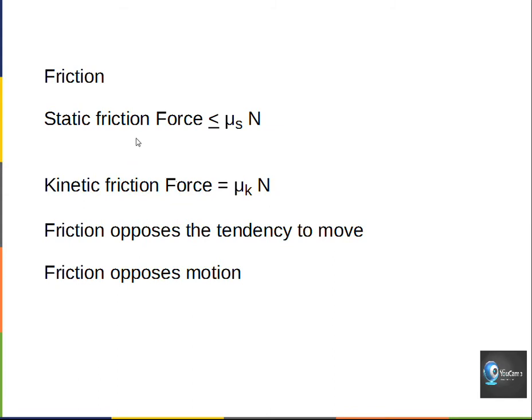So static friction is variable. It goes up to a value that is larger than the kinetic friction value. And again, friction opposes the tendency to move and opposes our velocity if we are in motion. So in our net force calculations, we're going to end up subtracting force of friction.